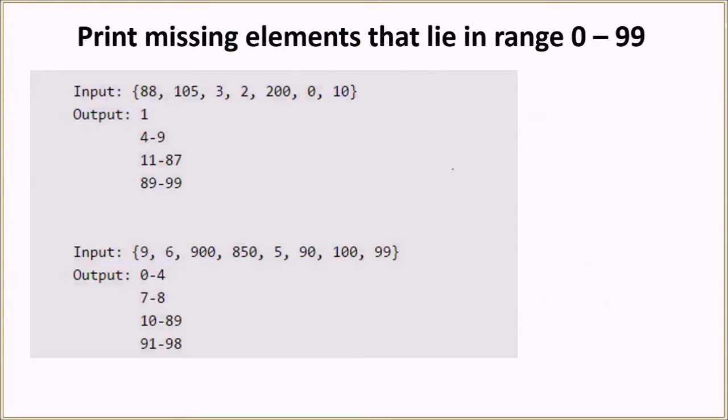Let us try to understand this problem with the help of a few examples. In the first example we have this input array. Here we have the element 0, then 1 is missing so we print out 1. Then we have 2 and 3, then the numbers from 4 to 9 are missing. Then we have 10, then the numbers from 11 to 87 are missing, then we have 88, then 89 to 99 numbers are missing so we print 89 to 99.